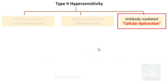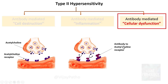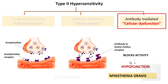The third mechanism in type 2 hypersensitivity is antibody mediated cellular dysfunction — not destruction, not inflammation, but dysfunction. Taking the example of myasthenia gravis: at a normal neuromuscular junction, acetylcholine secreted by the neuron binds to the acetylcholine receptor on the muscle, enabling normal muscle function. In myasthenia gravis, an antibody develops against the acetylcholine receptor, blocking normal acetylcholine activity and resulting in hypofunction — leading to weakness and fatigue that worsens with activity.